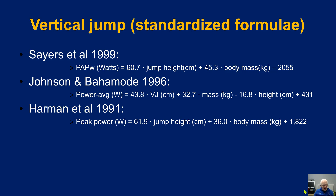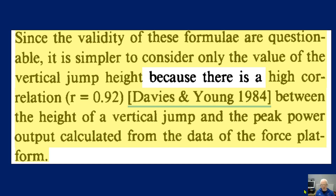These are not direct measures, and each comes with issues. How reliable are they? They are fundamentally affected by the reliability of the jump. How valid are they? It is questionable to estimate power when nothing time-based has been recorded. Notice that not one of these formulas has a time-based index within them. One summary states that the validity of these formulas is questionable, and it is simpler to consider just the vertical jump value itself, because there is a high correlation of r = 0.92 between jump height and peak power calculated from force platform data.